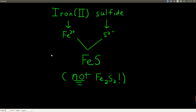What about iron(II) sulfide? When you have a Roman numeral, it's easy — it tells you the charge directly. Iron is Fe with a plus two charge, and sulfide is sulfur with a negative two charge. Using the cross method gives Fe₂S₂, but these share a common factor of two, so that's wrong. We divide to get FeS. Or simply: there are already two positives and two negatives, so one iron and one sulfide balances perfectly — the formula is FeS.